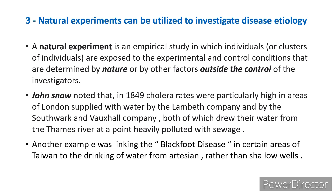John Snow noted that in 1849, cholera rates were particularly high in areas of London supplied with water by the Lambeth Company and by the Southwark and Vauxhall Company, both of which drew water from the Thames River at a point heavily polluted with sewage. Another example was linking blackfoot disease — peripheral vascular disease and gangrene — in certain areas of Taiwan to the drinking of water from artesian rather than shallow wells.